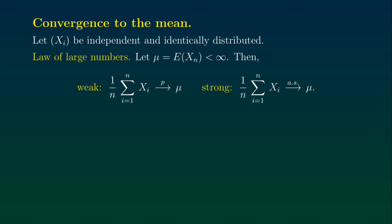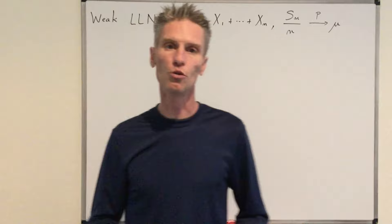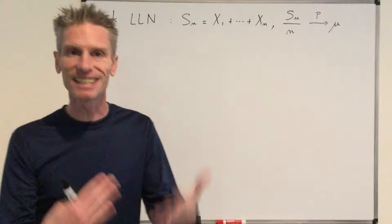You see that I didn't write any assumption about the variance of those random variables Xi. And in fact, the law of large numbers holds even when the variance of the Xi is infinite. However, in that case, the proof is based on Martingale theory — that's another of my playlists — and here I'm not going to use Martingale theory. So to prove both versions of the theorem, I'm going to assume that those random variables Xi have a finite variance.